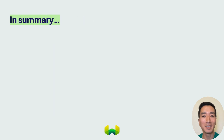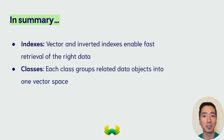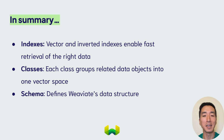To recap, this section is all about the key components of Weaviate's data structure, including indexes, classes, and schemas. Remember that indexes allow for fast data retrieval, classes group objects of the same type as one vector space, and schemas define Weaviate's data structure.